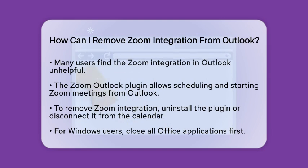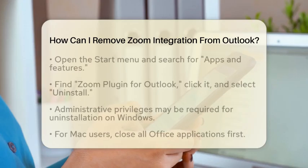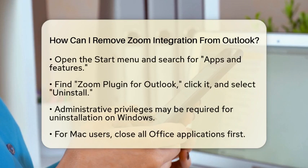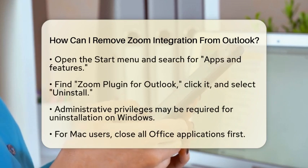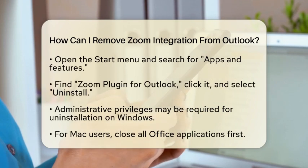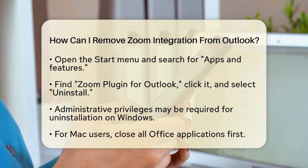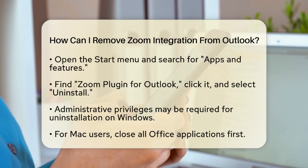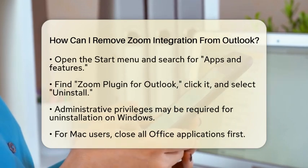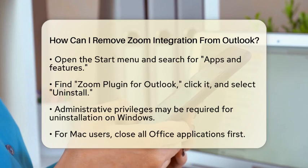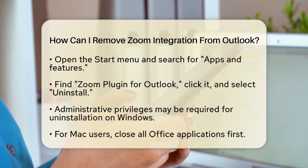If you are using a Windows personal computer, here is what you need to do. First, close all Microsoft Office applications including Outlook. Next, open the Start menu and type Apps and Features, then click on Apps and Features from the search results. Scroll through the list until you find Zoom Plugin for Outlook, click on it, and select Uninstall. You may need administrative privileges to complete this action.